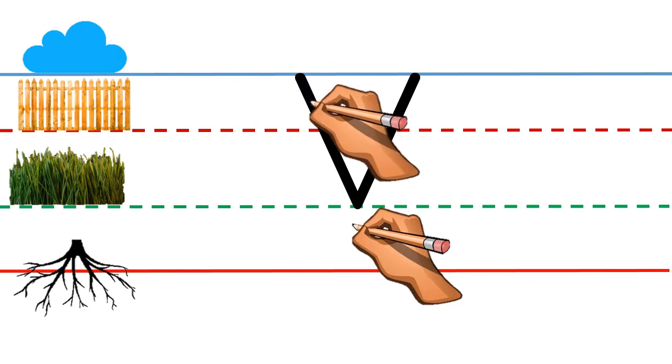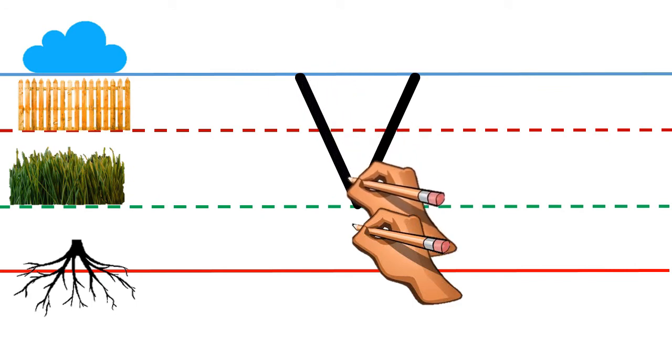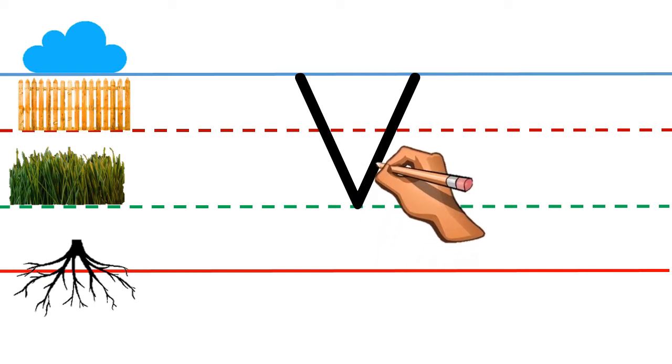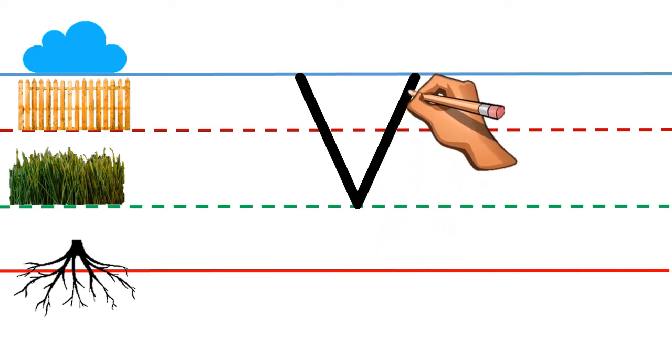Put your pencil on the skyline. Make a slant line and touch the grass line. Now go up, make another slant line and touch the skyline.